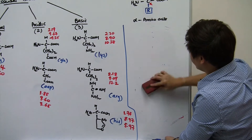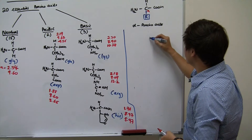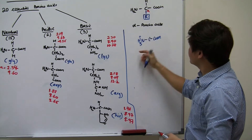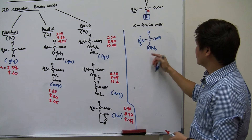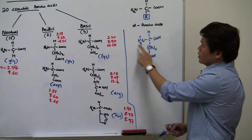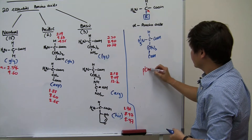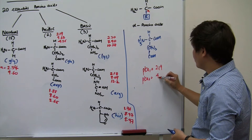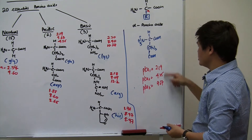Let's look at an example of an acidic amino acid — glutamic acid. Glutamic acid contains two acid groups: one on the main chain and one in the R group, which consists of two CH2 groups followed by an acid. It has two acid groups and one amine group, which is why there are three pKa values: pKa1 is 2.19, pKa2 is 4.25, and pKa3 is 9.67, arranged in ascending order.